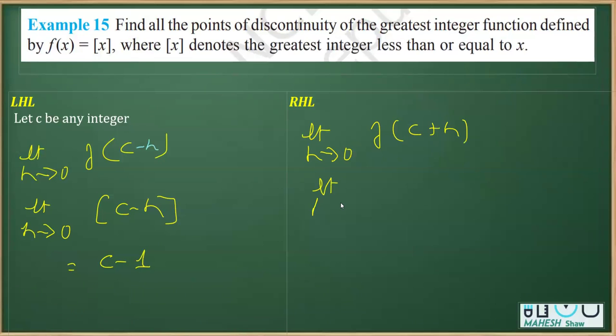Now if I plug in the value into the function, it's going to be [c + h]. Here too we can take the same example. Let's say I took 3, and to 3 if I add a very small value